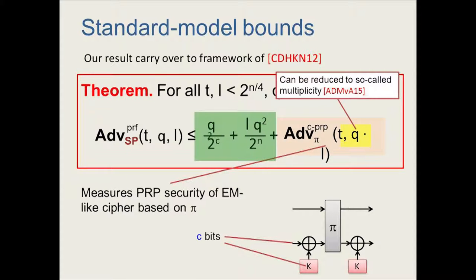To conclude, regarding other results: we also have standard model bounds. We can fit our result in an elegant framework from a workshop paper by Chang et al., which gave standard model security proofs for sponge-like PRF constructions. We fit our improved bound into their framework, which reduces the standard model PRF security of keyed sponges to the PRP security of the underlying permutation when placed into an Even-Mansour-like cipher — but instead of whitening the whole input and output as usual in Even-Mansour, you only whiten the lower C bits of the inputs and output. The standard model result is weaker than what we can prove directly in the random permutation model when translated back to that benchmark model.